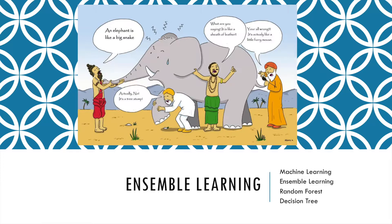There's an old story of blind men and an elephant. They were asked to touch an elephant and describe what it is. The first man touched the elephant's nose and said the elephant is like a big snake. The other man was holding the elephant's leg and said it's actually like a tree stump. Another man touched the ears and said it's like a piece of leather, like a big fan.